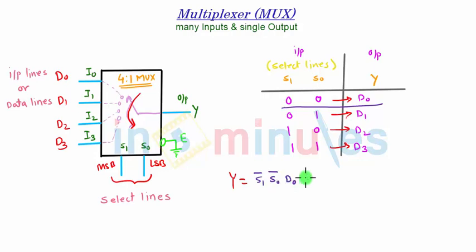This will be the first term, plus the second term. If I write S1 is 0, S0 is 1, so it will be S1 bar, S0, D1, and similarly I will complete the whole expression.